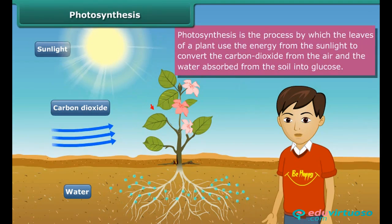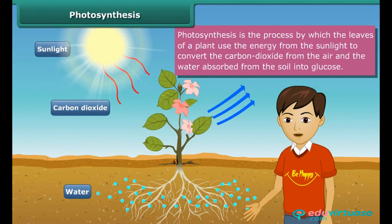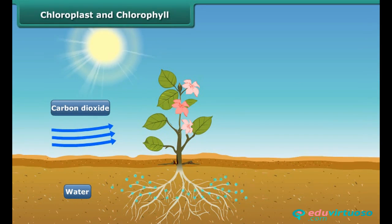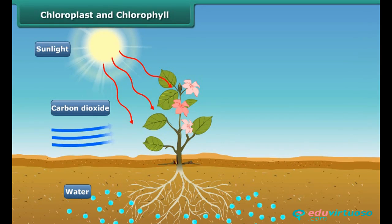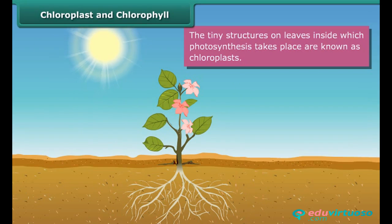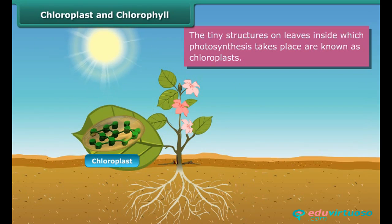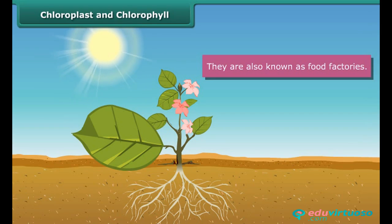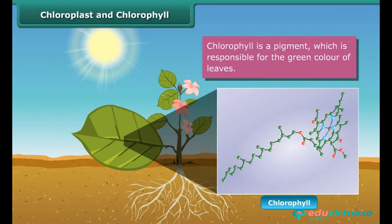The food prepared by leaves is then transported to the different parts of the plant. The tiny structures on the leaf inside which photosynthesis takes place are known as chloroplasts. Due to their role in food production, they are also known as food factories. Chloroplasts are green in color and get their color from a pigment called chlorophyll. Chlorophyll helps leaves prepare food.